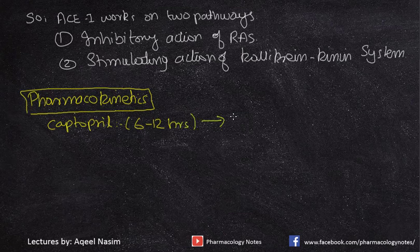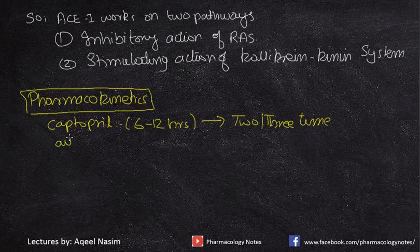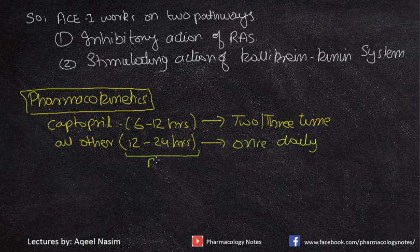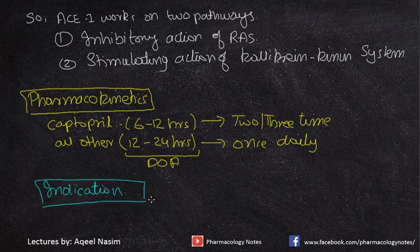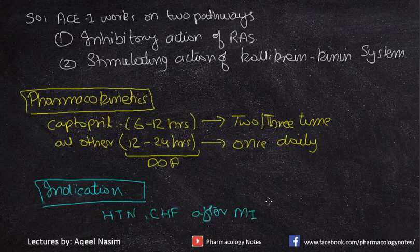Regarding pharmacokinetic properties: captopril has a six to twelve hour duration of action, so it can be given two to three times daily. All other ACE inhibitors have a duration of action of 12 to 24 hours and can be given once daily. The indications for ACE inhibitors include hypertension, congestive heart failure, and use after myocardial infarction.